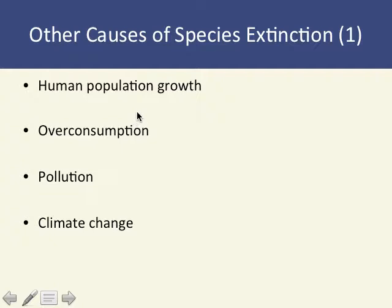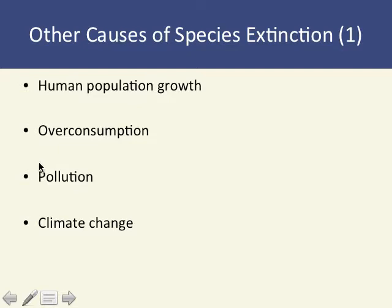The 'P' in HIPCO refers to human population growth. It's not simply the number of people on the planet that's a problem, but the amount we consume. As countries like China see populations move from poverty into the middle class, consumption of goods increases dramatically, putting greater pressure on ecosystems. More people and better lifestyles together drive over-consumption, which connects to pollution and climate change.